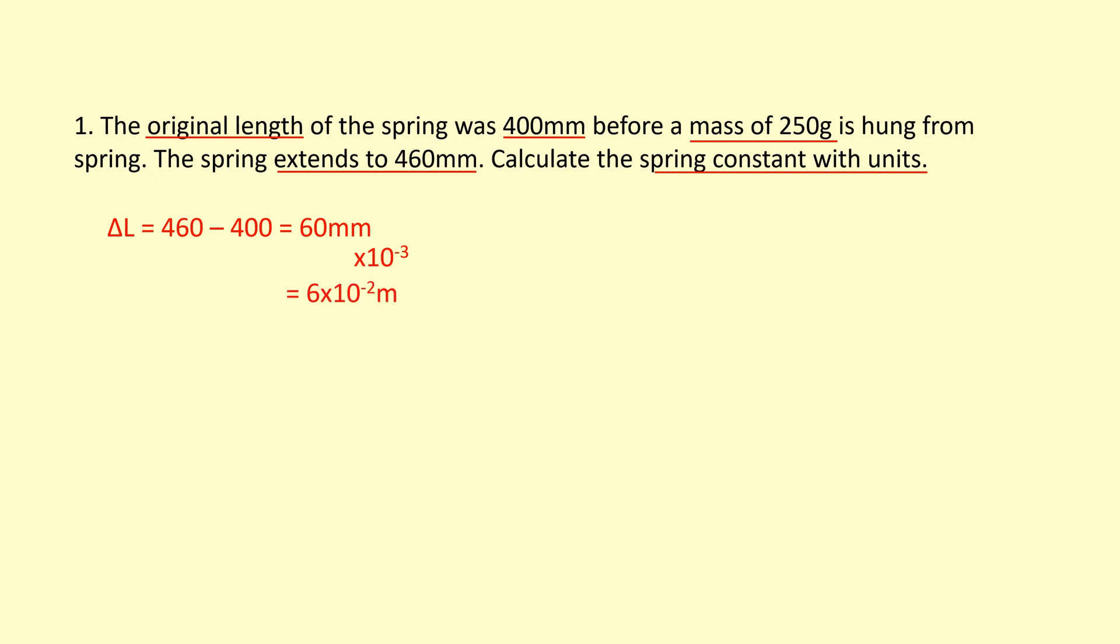But then to get the force, we need to calculate the weight of the mass that's hanging on it. The mass is currently in grams. We're going to turn it to kilograms by dividing by a thousand. So the mass is going to be 0.25. And then times that by 9.81. And then you've got your weight or the force there. And put that into Hooke's law. Let's just rearrange it first.